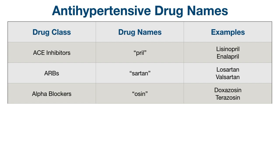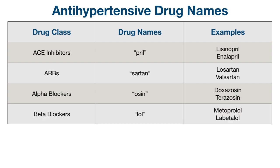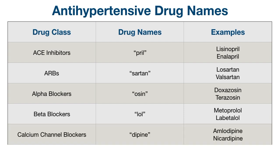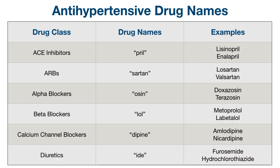Alpha blockers, specifically the selective alpha-1 blockers, end in -osin, such as doxazosin and terazosin. Example beta blockers include metoprolol and labetalol, ending in -lol. The dihydropyridine calcium channel blockers typically end in -dipine, such as amlodipine and nicardipine. Finally, many but not all diuretics end in -ide, as we can see with furosemide and hydrochlorothiazide.